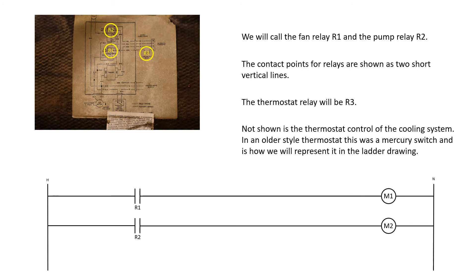Not shown is the thermostat control of the cooling system. In an older style thermostat, this was a mercury switch and is how we will represent it in the ladder drawing.